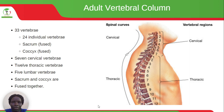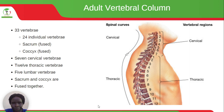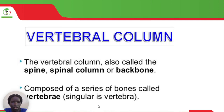We have a picture showing from C1 up to C7 — those are the cervical vertebrae. Then we have the thoracic vertebrae, also from T1 up to T12. The vertebral column can also be called the spine, spinal column, or backbone.